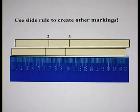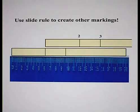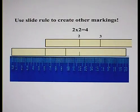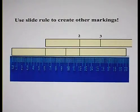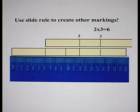By using the partially gridded slide rule and moving the beginning to the number 2, we can then calculate the products of 2 times 2 and 2 times 3, which gives us the logs for 4 and the log for 6.